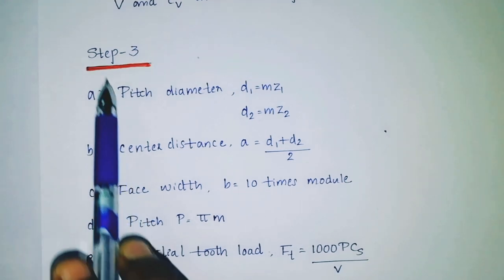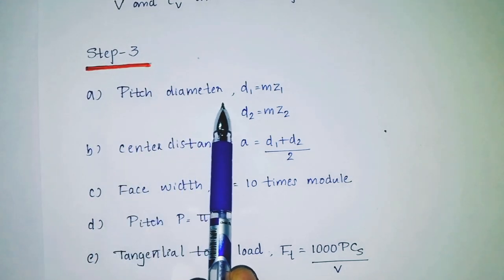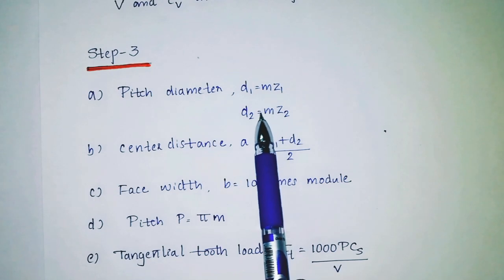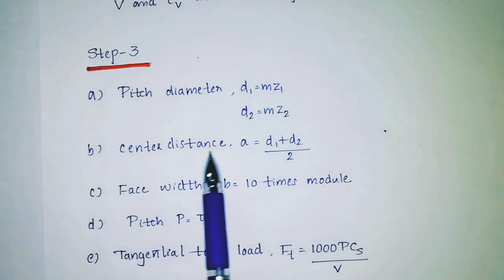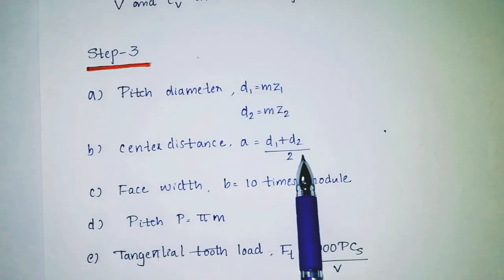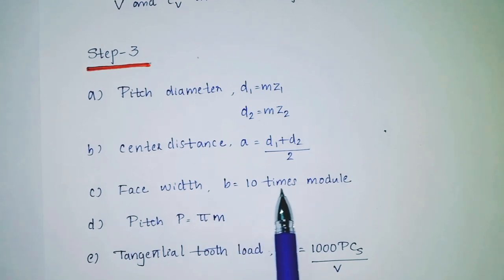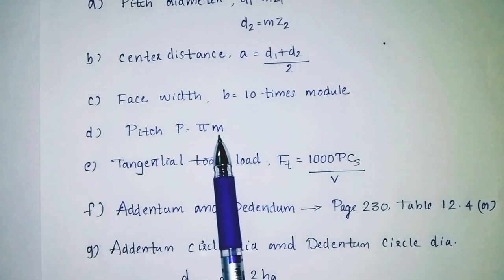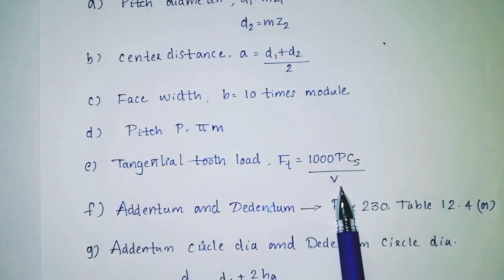Step 3: First we put the pitch diameter. D1 equals mz1, d2 equals mz2. Center distance a equals d1 plus d2 by 2. Face width b equals 10 times module. Pitch p equals pi into m. Tangential tooth load equals 1000 Pcs divided by v.